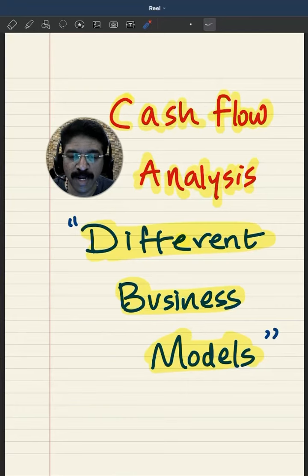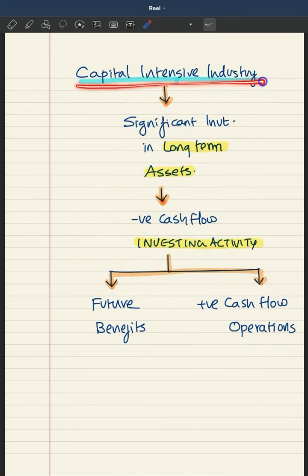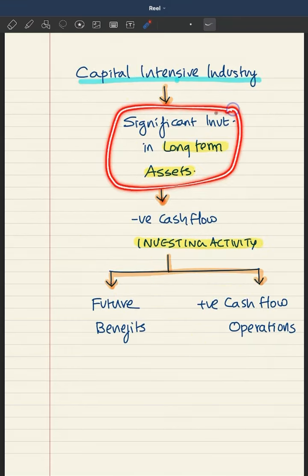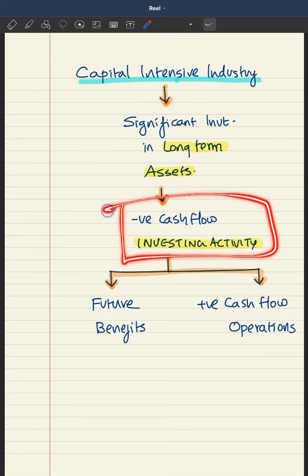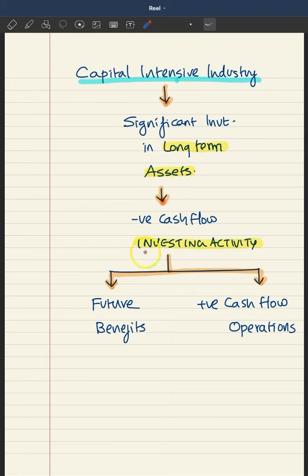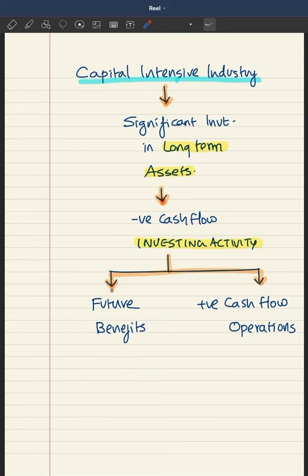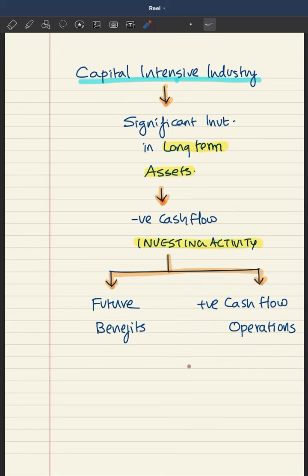Let's see how cash flow patterns are going to be in different business models. If you take a capital-intensive industry, they'll be making significant investment in long-term assets, and because of that they will most often have negative cash flow under investing activity. They are doing this with an expectation of making positive cash from operations in the future, so positive cash flow from operations is what justifies this.